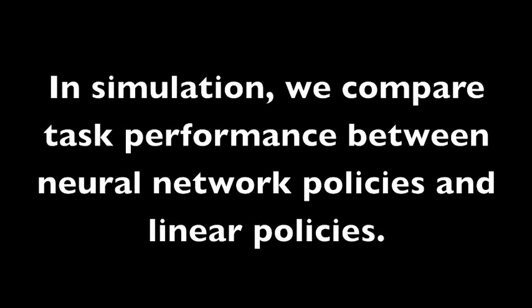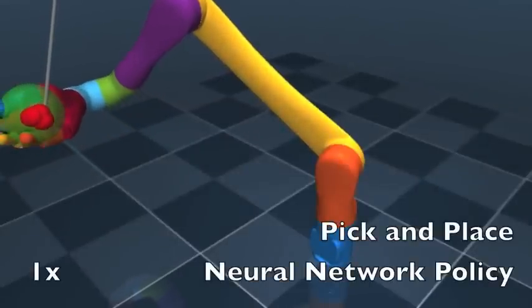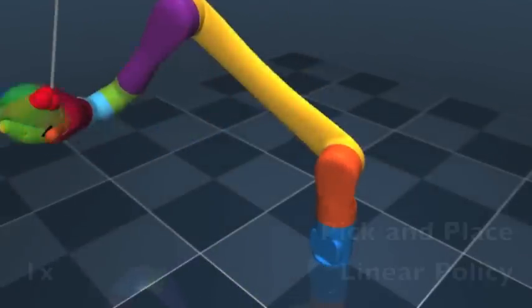In simulation, we compare task performance between neural network policies and linear policies. Both neural networks and linear policies achieve 100% success at the pick-and-place task.